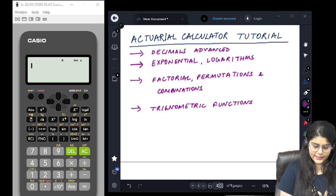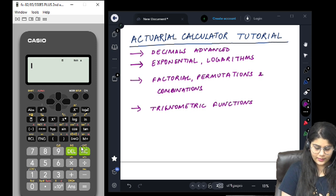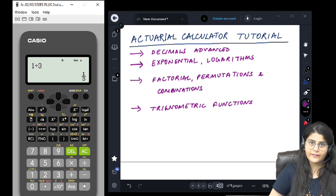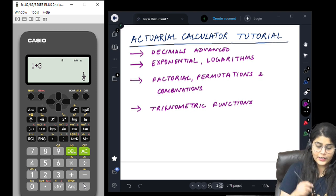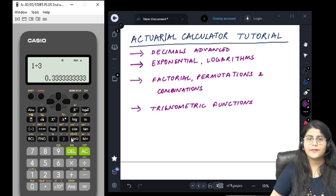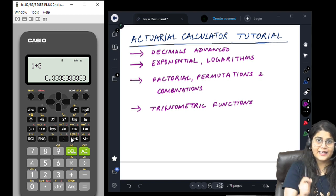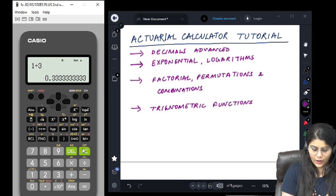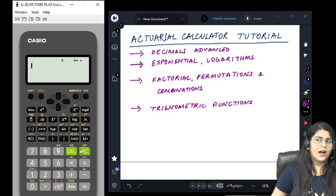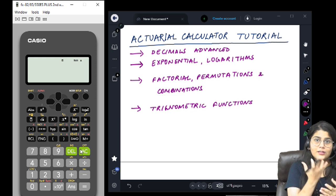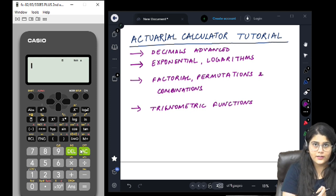So, in the last session, we had discussed if we press 1 by 3, then the answer gives us 1 divided by 3 in fraction form. What we wanted to see was, of course, we know to convert it into decimal, we can simply press the SD button. But to make it default decimal, what do we do? Now, you have to understand how to speak with the calculator because actually the calculator is also speaking with you.